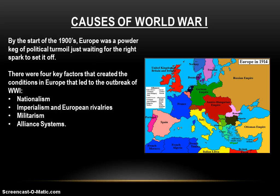By the start of the 1900s, Europe really is that powder keg of political turmoil, just waiting for the right spark to set it off. And as we mentioned earlier, there are four key factors that create these conditions in Europe: nationalism, imperialism and European rivalries, militarism, and alliance systems. These things together create those conditions, and we're going to examine each of those four here as we move forward.